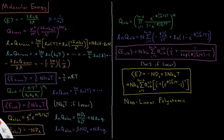Now we're going to use the alternative approach: if you just have the partition function, how do you get the average energy? The energy is the negative partial derivative with respect to beta of the natural log of the partition function, where beta is equal to 1 over the Boltzmann constant times the temperature T.